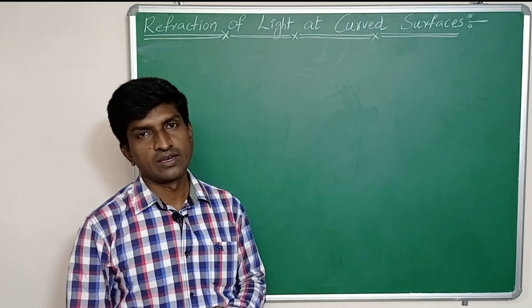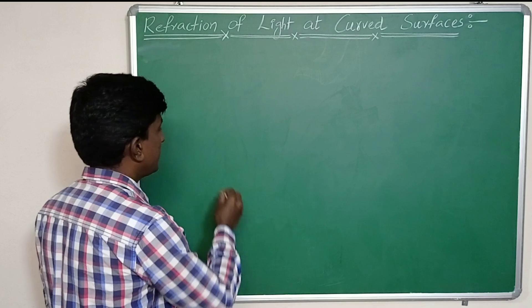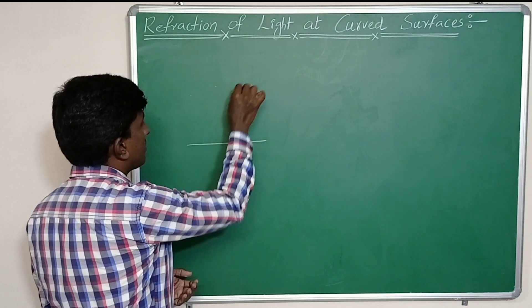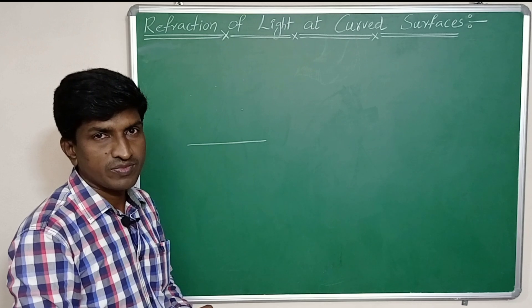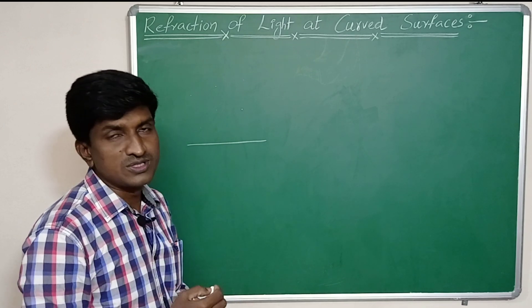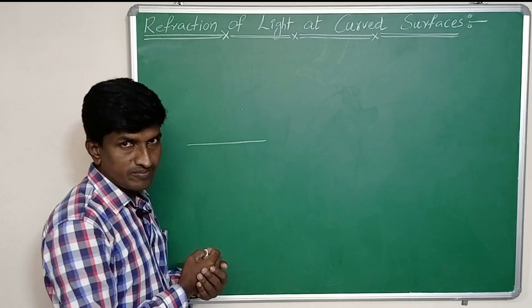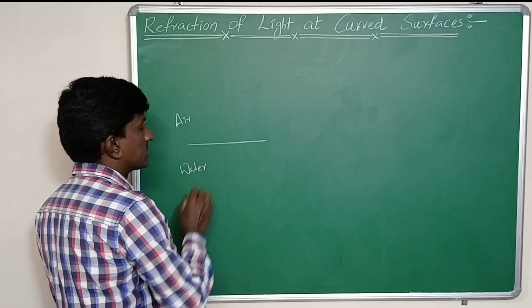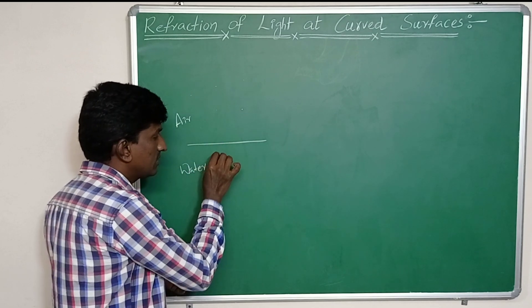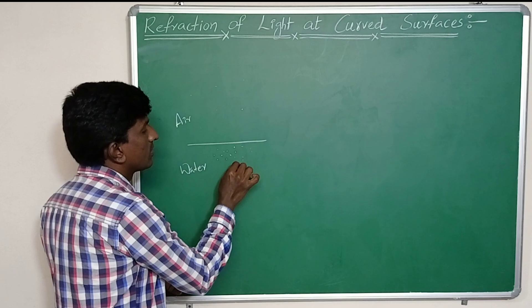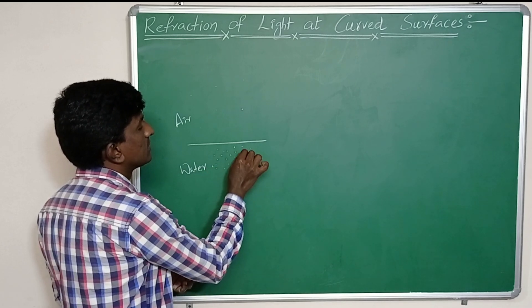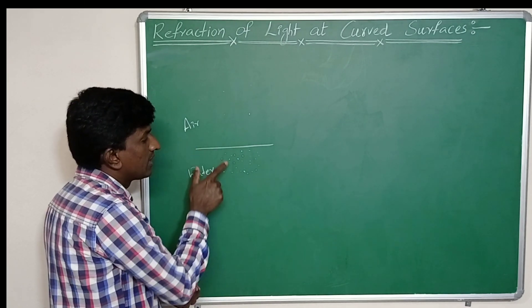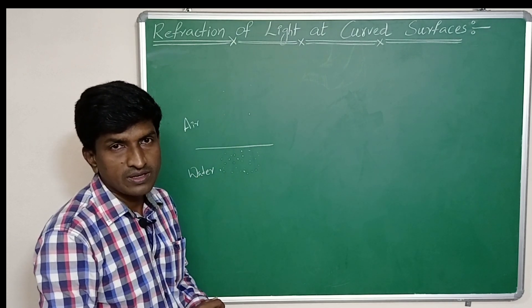For example, consider air. We know that light travels through air, and the particles of air are far from each other. Whereas in water, the particles are closer together. So air is said to be rarer media and water is said to be denser media.